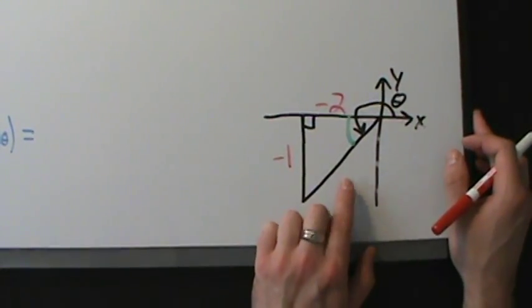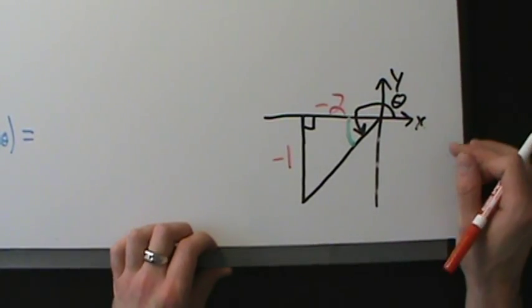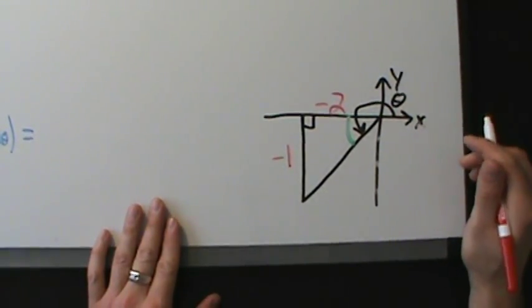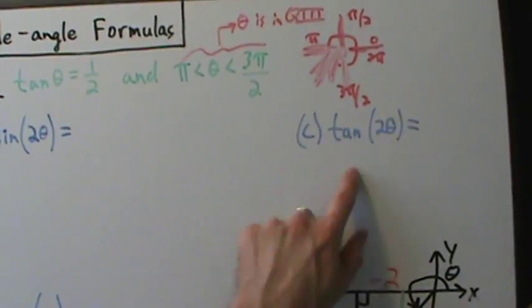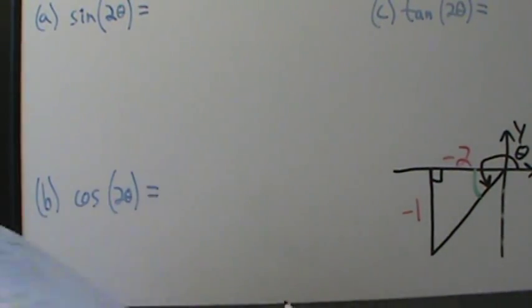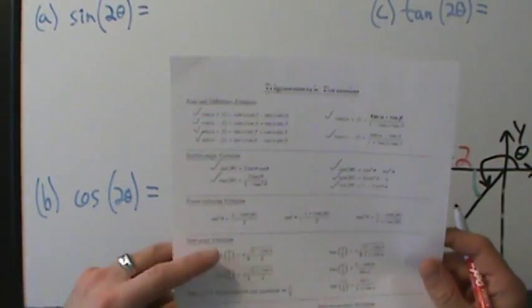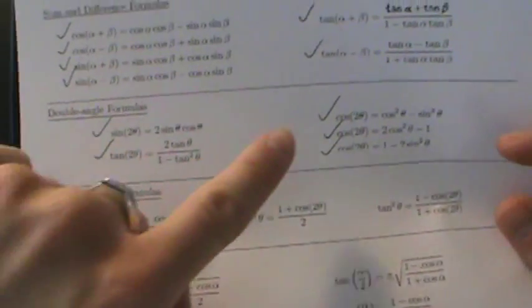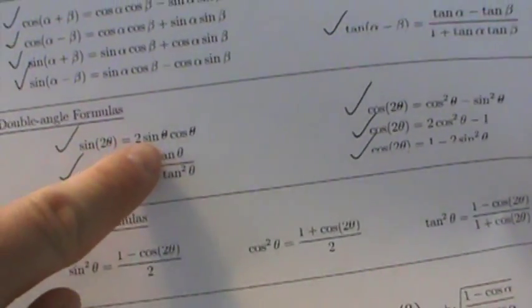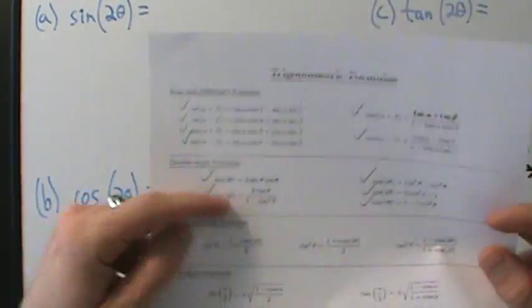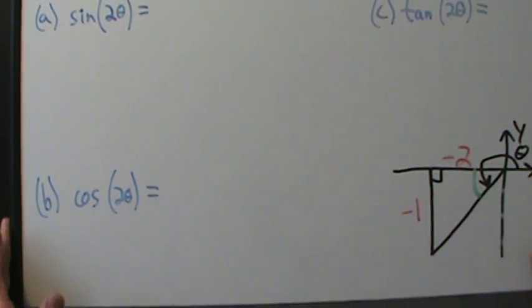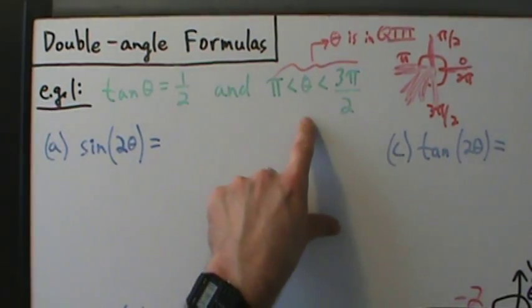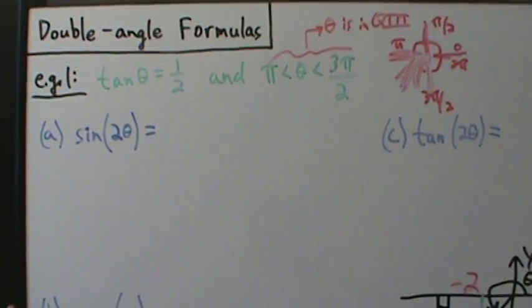We don't know the hypotenuse yet, but remember the hypotenuse is always positive no matter what. We need to get the hypotenuse because we want to find sine of 2 theta, cosine of 2 theta, and tangent of 2 theta. From our formula sheet, those all involve sine of theta and cosine of theta. So we have to find sine of theta and cosine of theta before we can evaluate any of this.